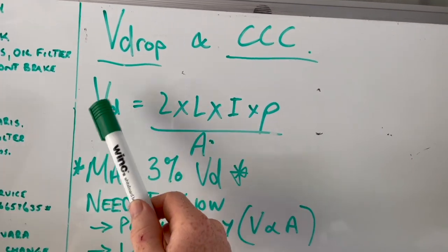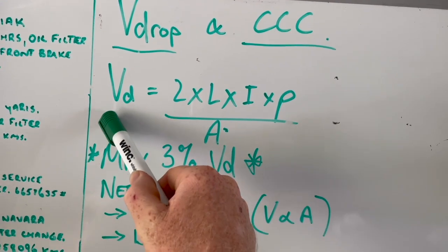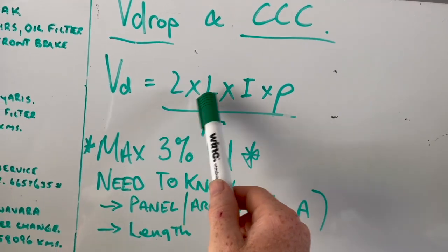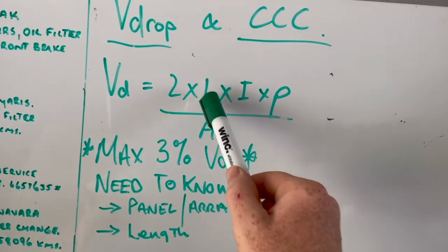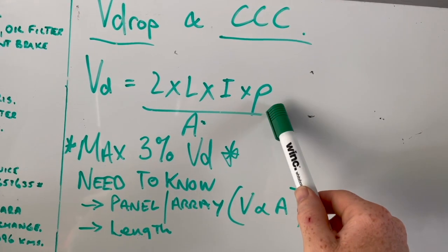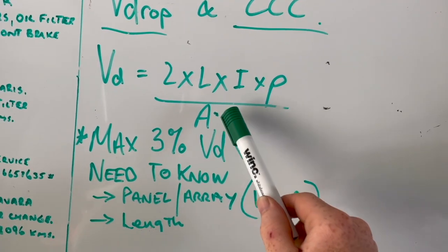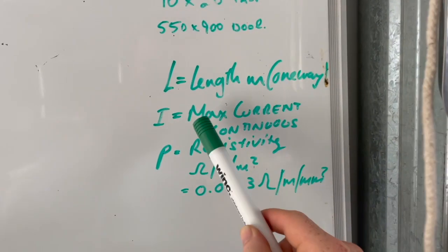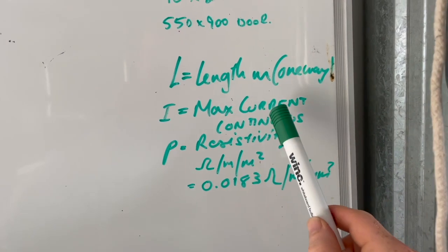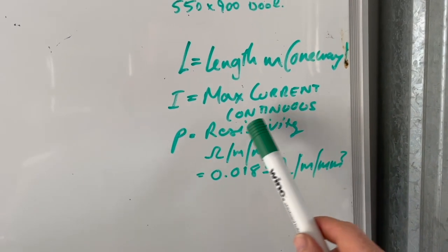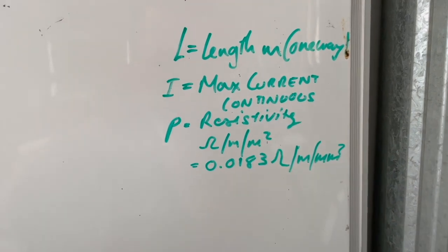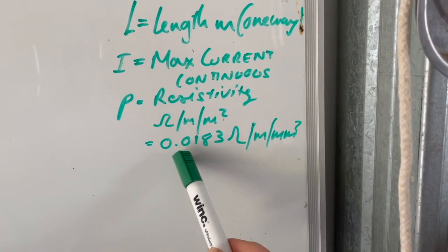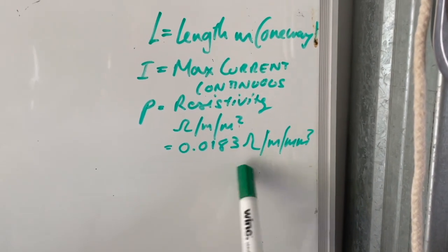This is the formula you need to know voltage drop. That'll give you how many volts drop over this situation, which is 2 times the length of the cable one way, times by I is the current, times by Rho is resistivity, divided by the area, cross-sectional area of your cable. And P is resistivity, which is ohms per meter per millimeter squared. And that standard figure for a copper cable is 0.0183. So that's all we really need to know.